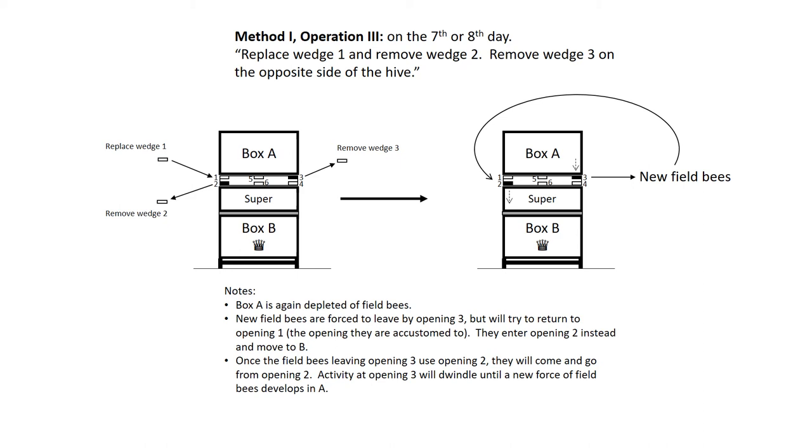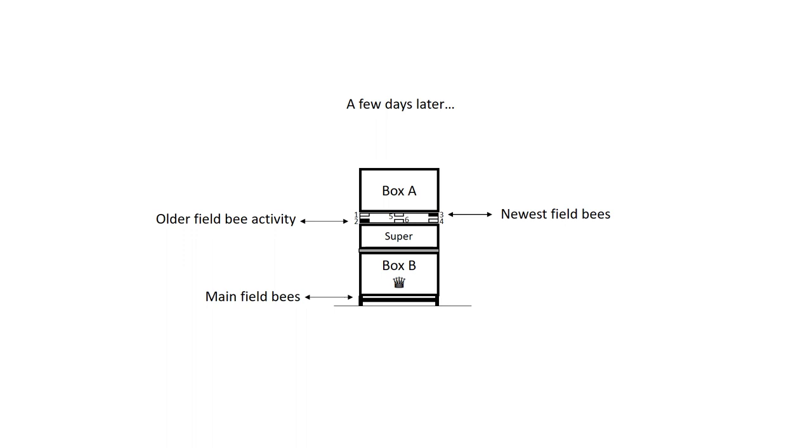Once the field bees leaving opening three use opening two, they will come and go from opening two. Activity at opening three will dwindle until a new force of field bees develops in A. A few days later, the most recently developed field bees in A will use opening three for exit and entry. These bees will soon be siphoned into B, like in operations two and three.